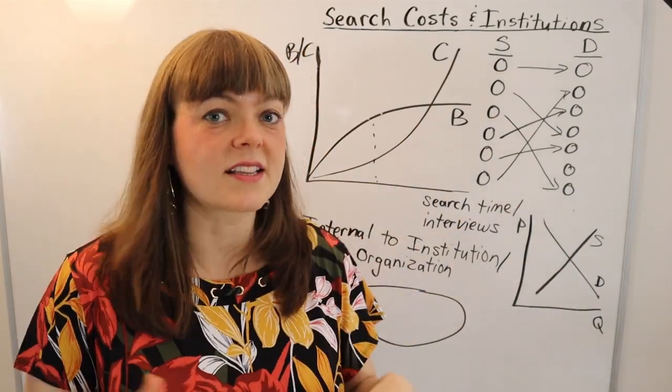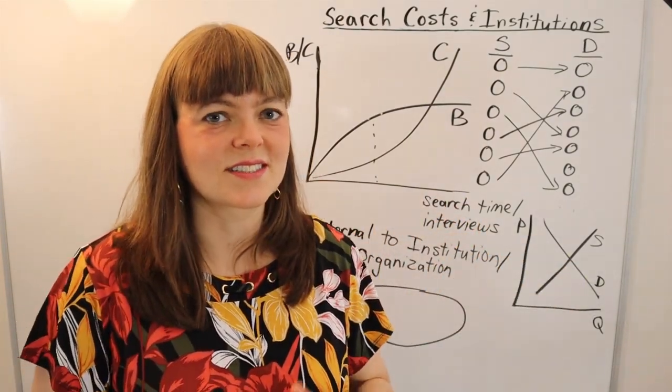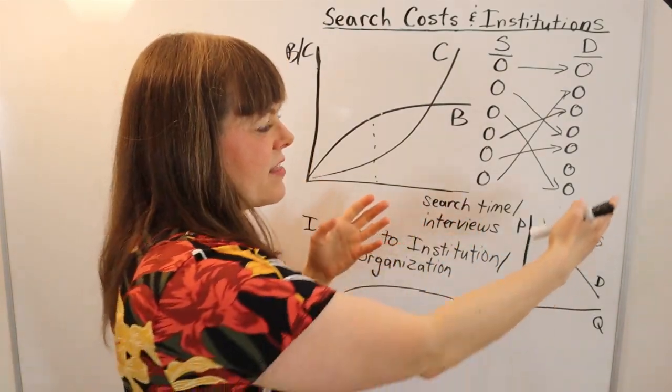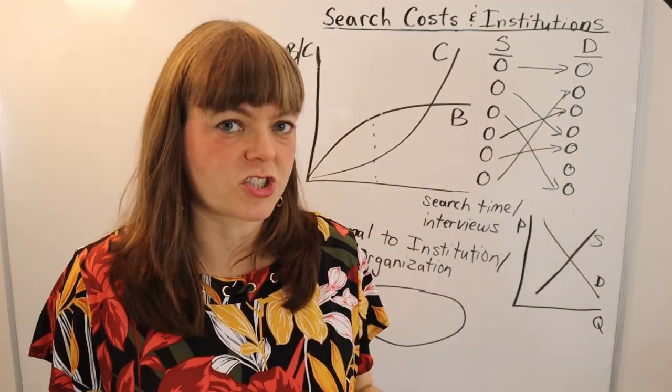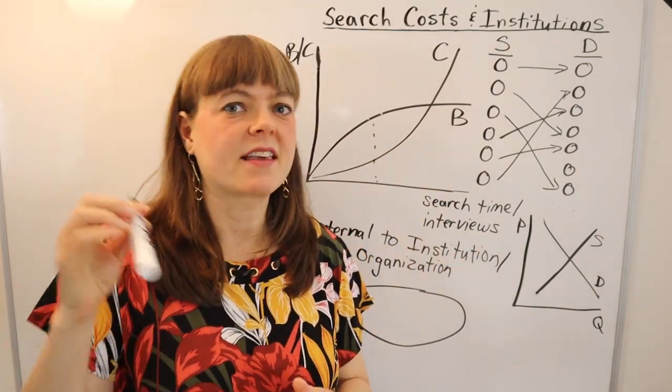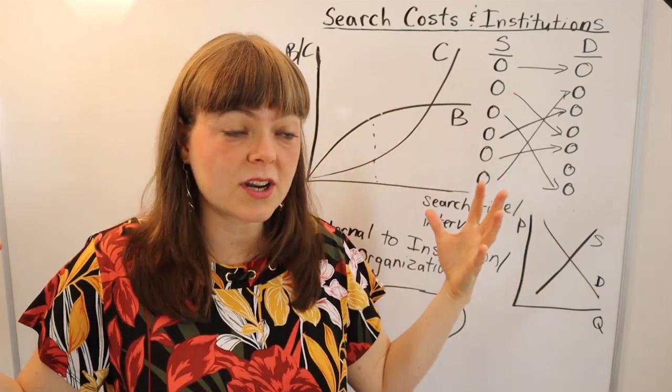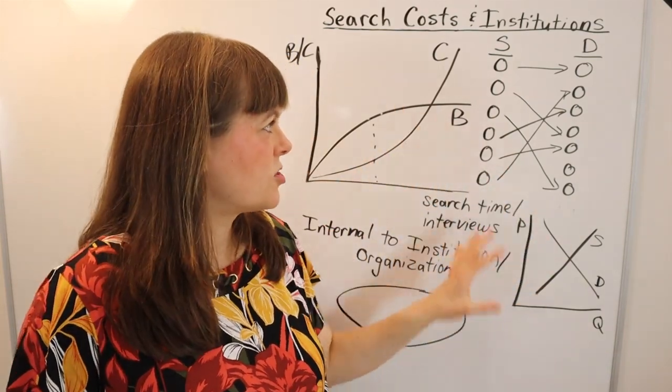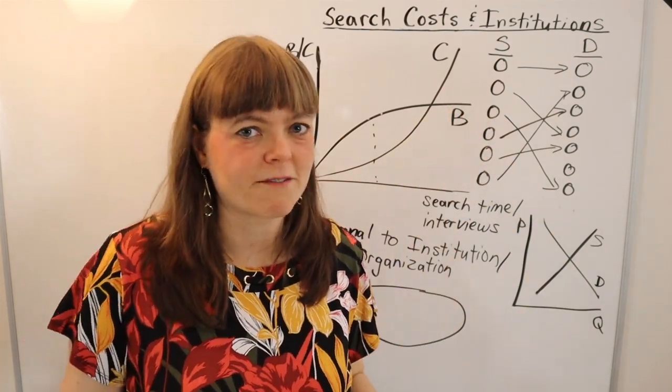So in a lot of ways, institutions, or at least economically oriented institutions, they're designed to make the search process of matching suppliers and demanders more efficient. And so search costs are definitely a key part of institutional economics because it's really about structuring our institutions to minimize search costs and make the whole system more efficient.